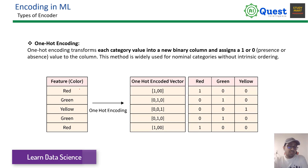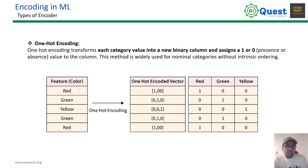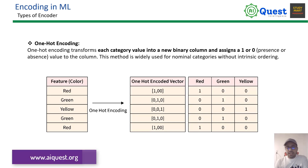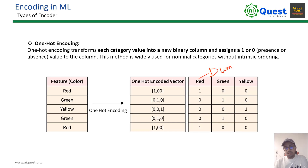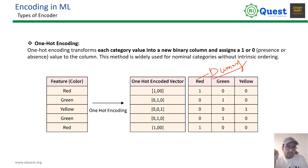This is called a dummy variable. If you have a unique instance or unique value, you can create a dummy column for each unique value.